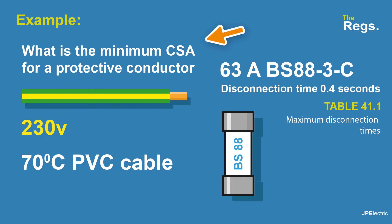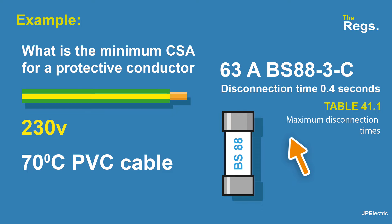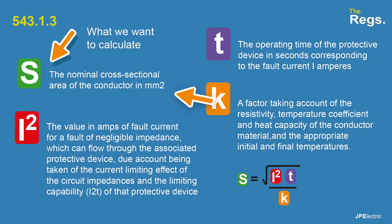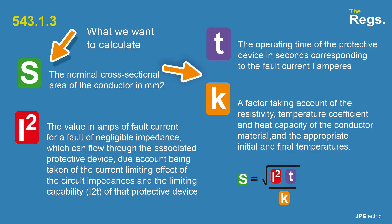Here's an example. What is the minimum cross-sectional area for a protective conductor with this set of values? It's at 230 volts, the cable is 70 degrees C PVC cable, the protective device is a 63 amp BS88-3C, and we require a disconnection time of 0.4 seconds. The adiabatic equation is: S equals the square root of I² times T, divided by K. S is the nominal cross-sectional area in millimetres squared, I² is the fault current in amps, T is the operating time of the protective device, and K is a factor found in a table in BS7671.